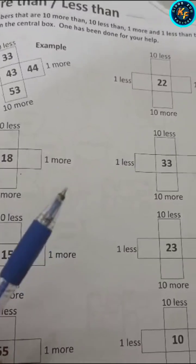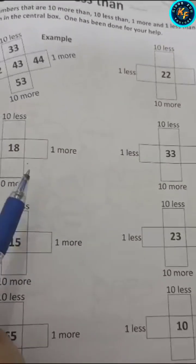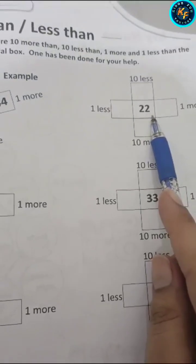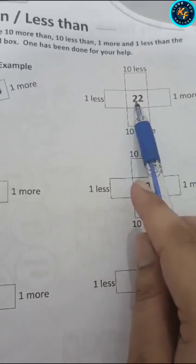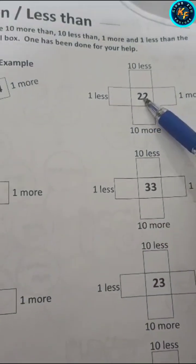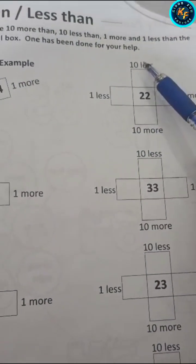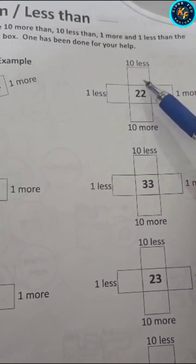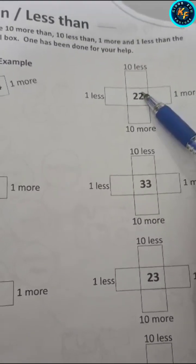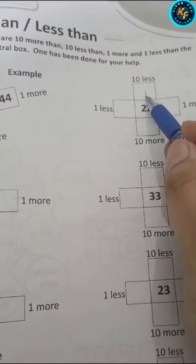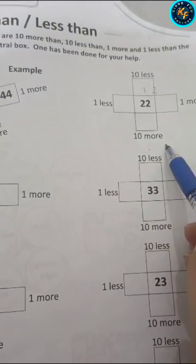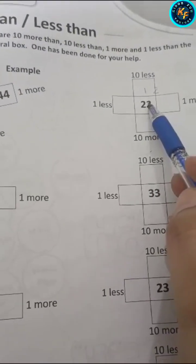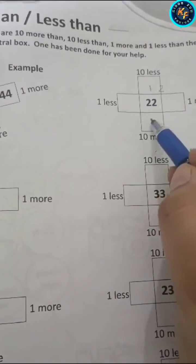One has been done for your help. Look at the central box which has the number 22. According to this number, you have to solve the others. For 10 less than, minus 10 from 22 — your answer will be 12. And for 10 more than, add 10 to 22 — your answer will be 32.